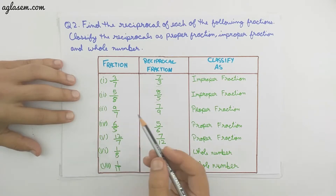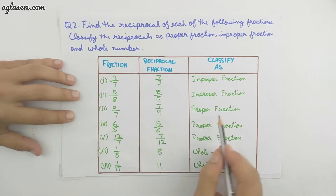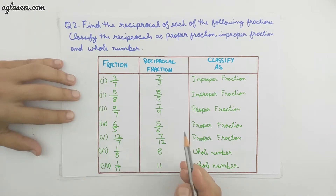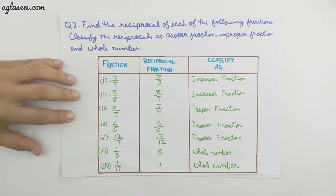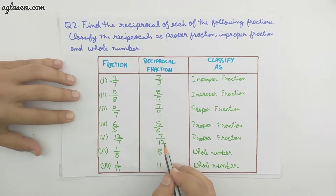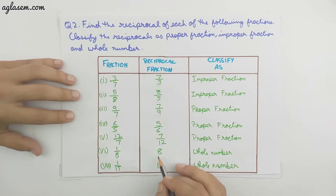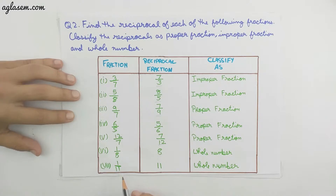Third, the reciprocal of 9/7 is 7/9, which is a proper fraction because the denominator is greater than the numerator. Fourth, the reciprocal of 6/5 is 5/6, which is a proper fraction. Fifth, the reciprocal of 12/7 is 7/12, also a proper fraction because 12 is greater than 7. Sixth, the reciprocal of 1/8 is 8, which is a whole number. Seventh, the reciprocal of 1/11 is 11, also a whole number.